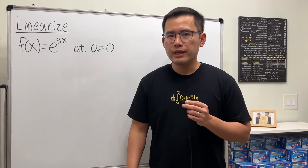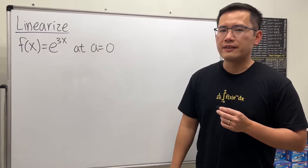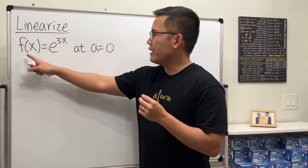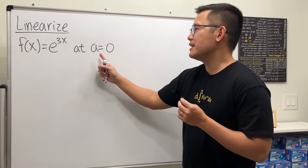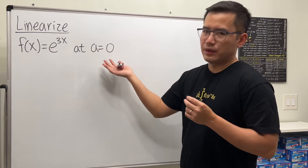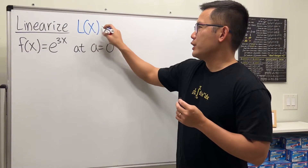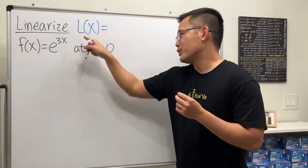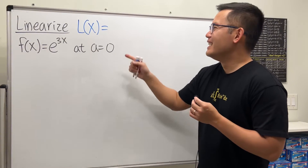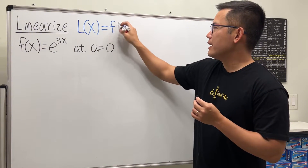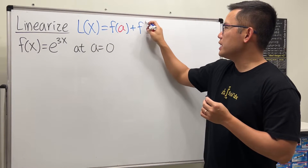In this calculus tutorial, I'm going to show three examples on how to linearize a function at some value. Here we have the first one: f of x is equal to e to the 3x, and we are going to linearize it at a equals zero. Let me remind you of the formula — it's really just the equation of the tangent line. We write down L of x for the linearized function, and this is going to be f at that a value, then we add the derivative there.